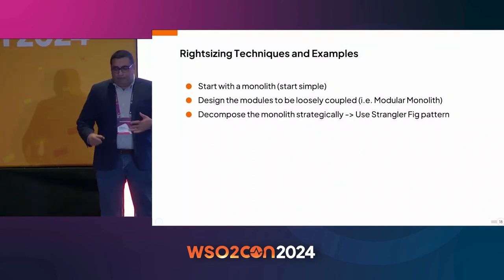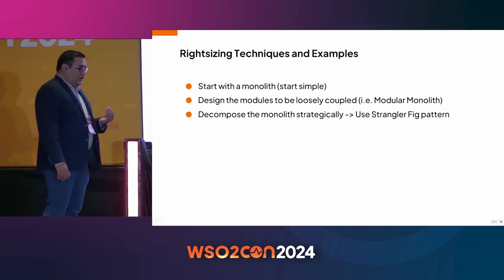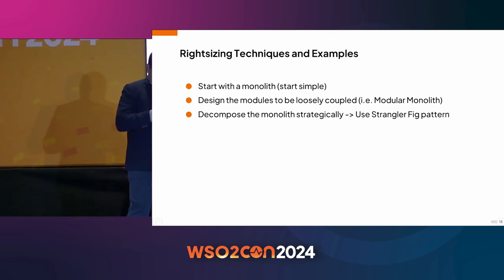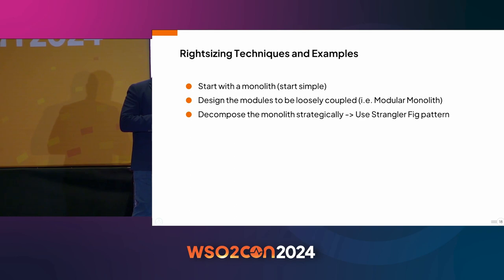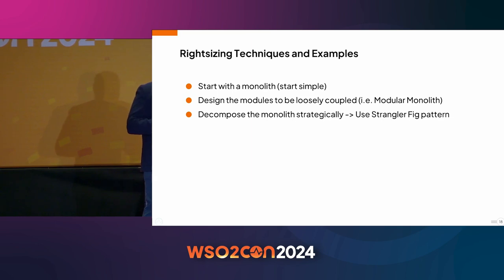So how do you approach right sizing? My suggestion is to start very simple — either with a monolith or a modular monolith where the modules are loosely coupled — and then decompose the monolith strategically as you move on. There's a very famous pattern called the strangler fig pattern. Let me talk a little bit about what this is all about.